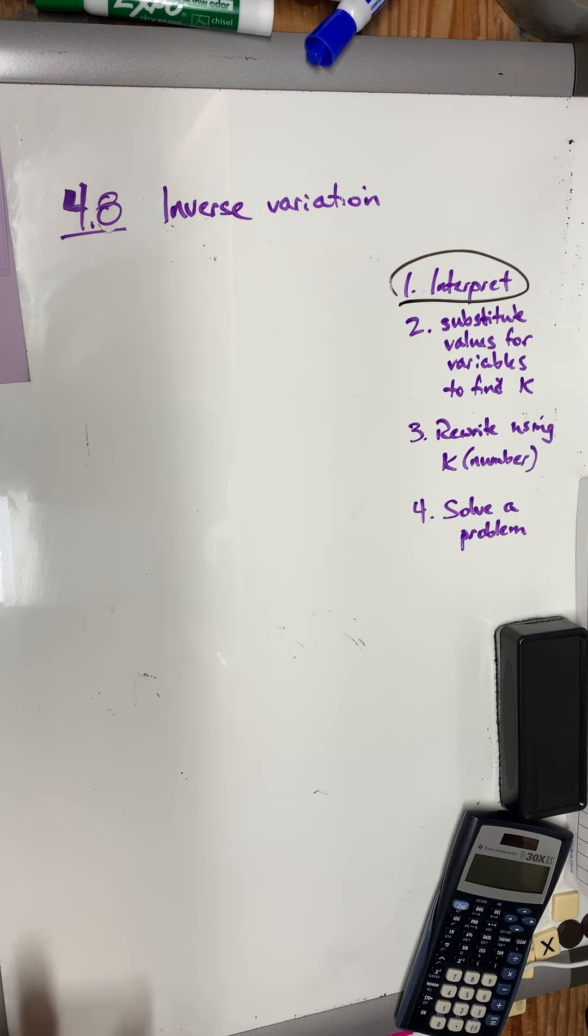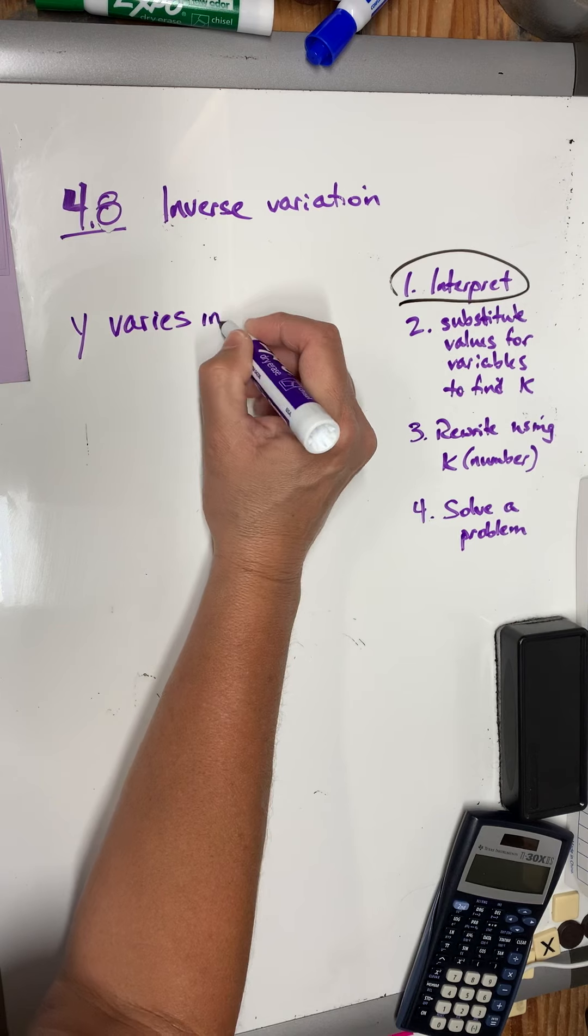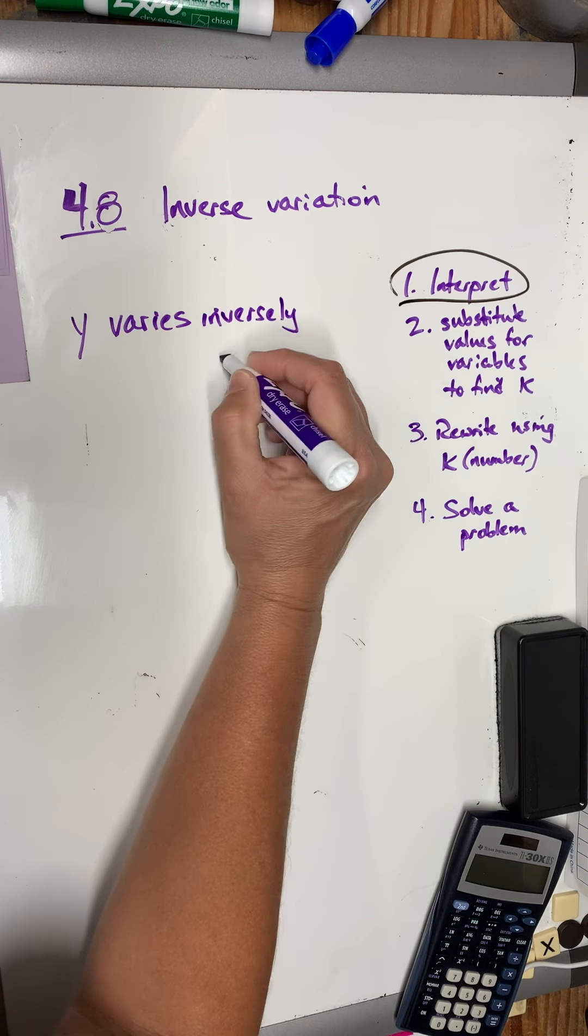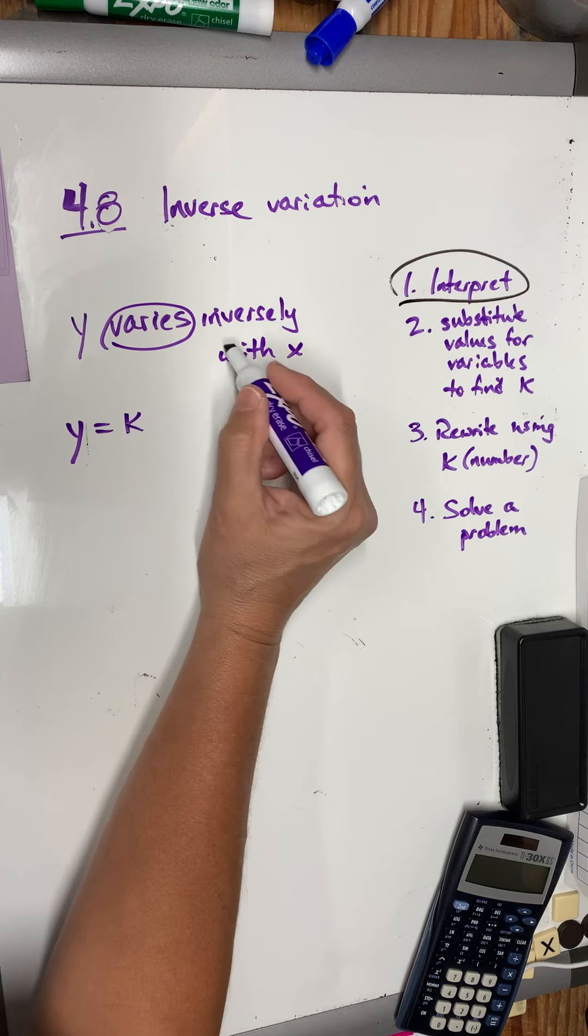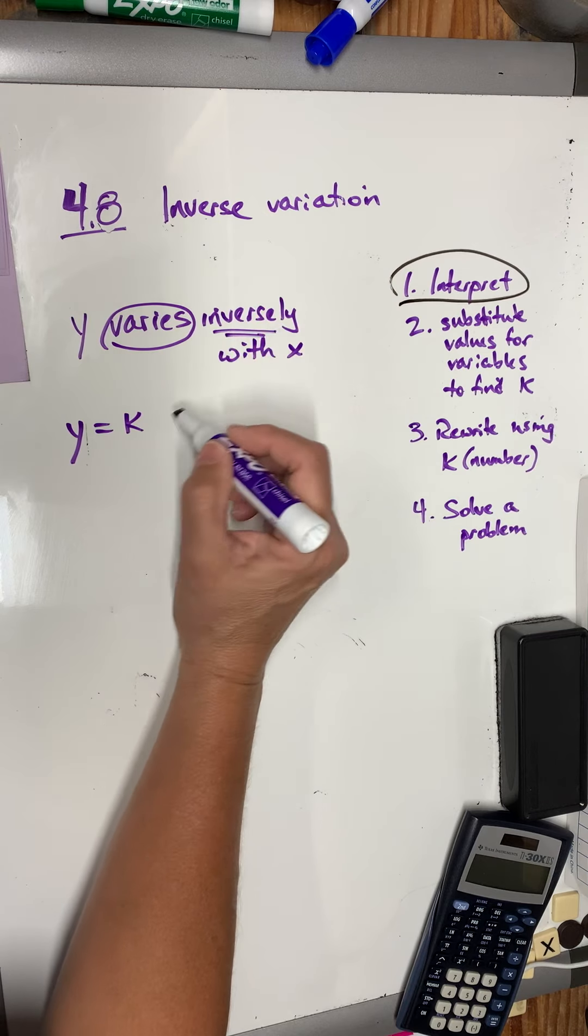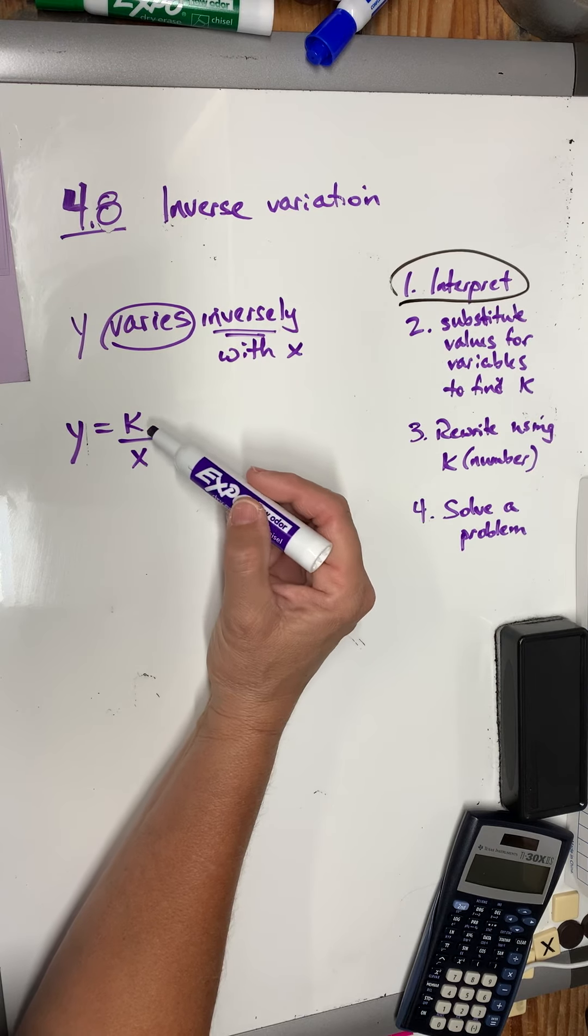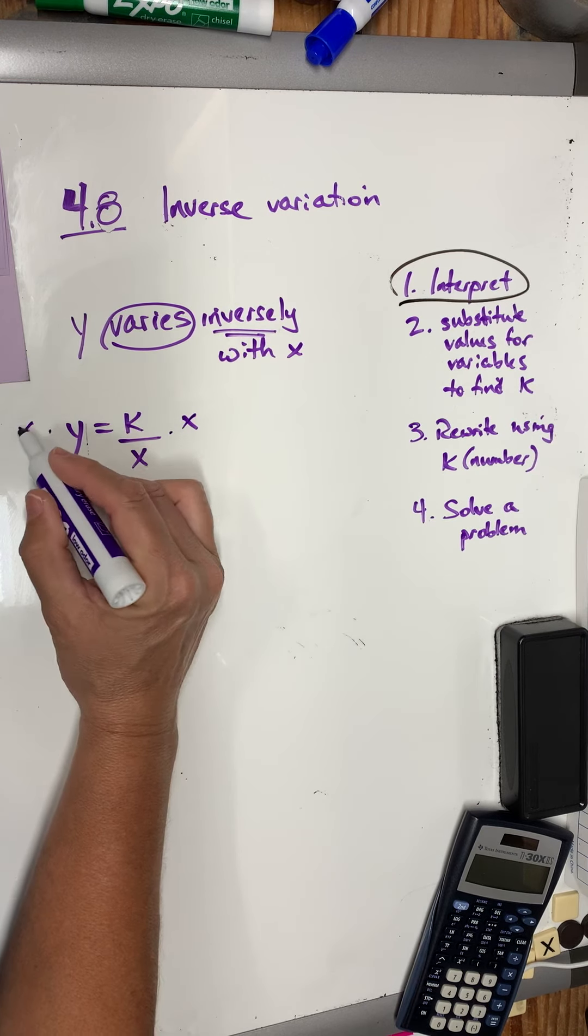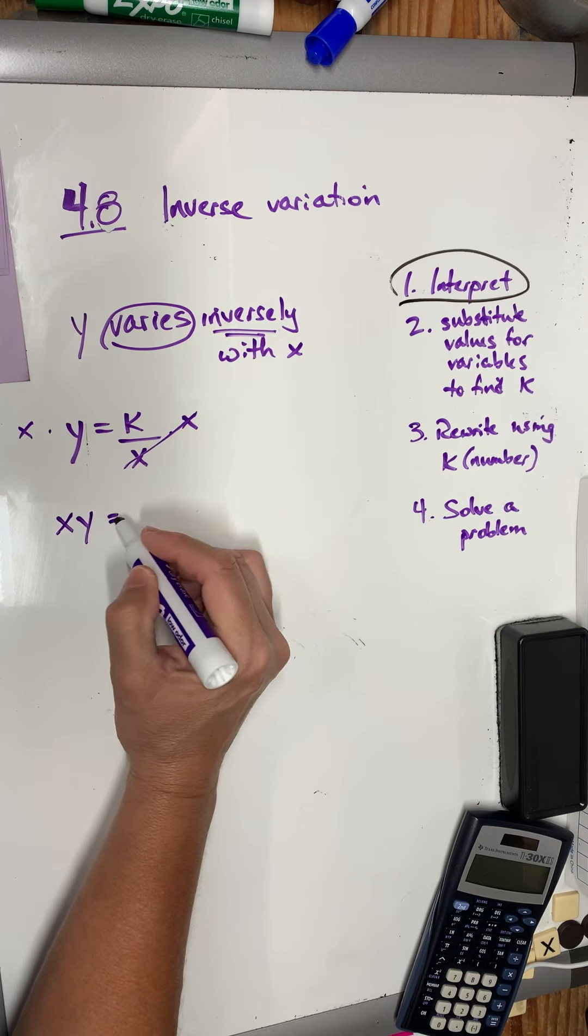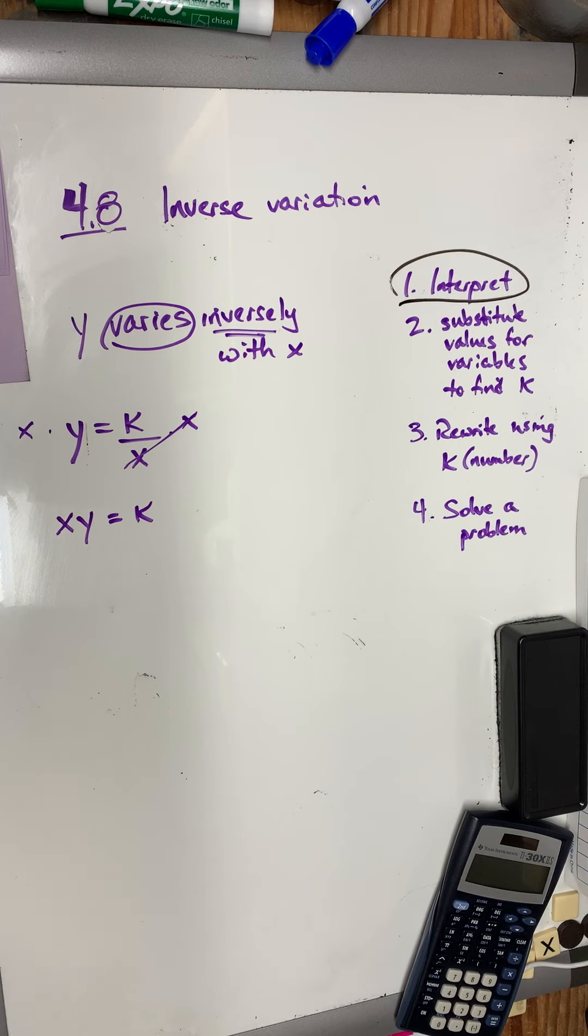So, let's take a look at question 1. It says, y varies inversely with x. So, I have y equals k. Inversely means the x goes below the k. So, in any given problem, if I want to know what k is, I would cross-multiply and discover that x times y would give me k, which is the opposite of what we did on 4.7.